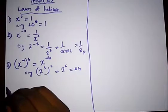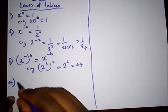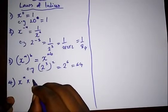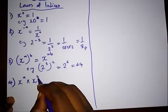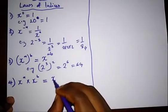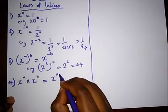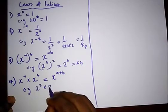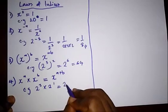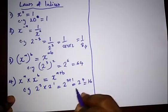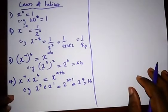Another law: when you have a number raised to power a multiplied by that same base raised to another power b, you simply keep that base and add the powers together — giving x raised to a plus b. For example, two raised to the power three multiplied by two raised to the power one gives two raised to the power four, which is 16.